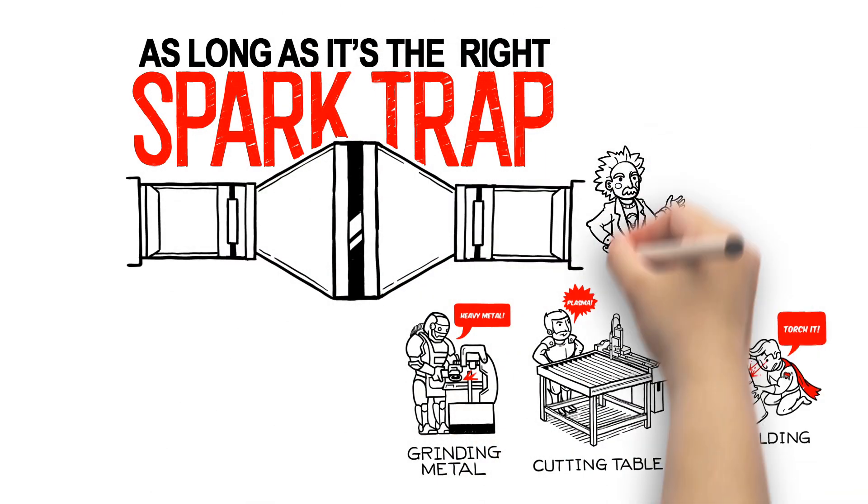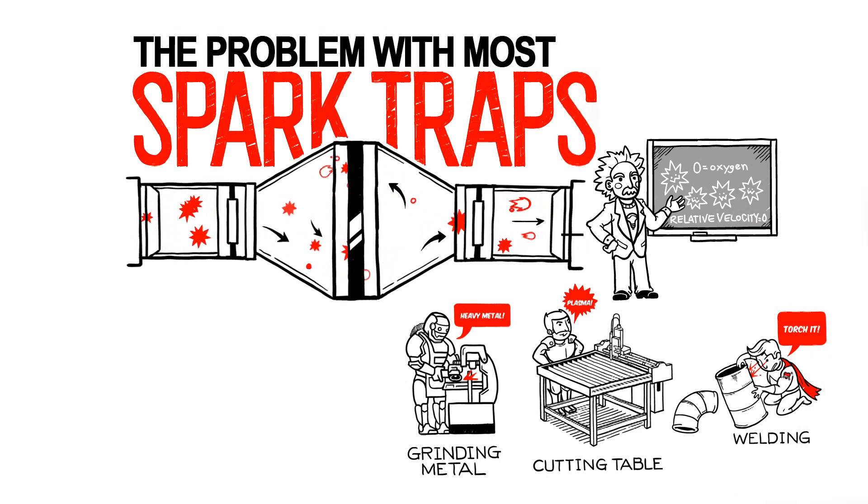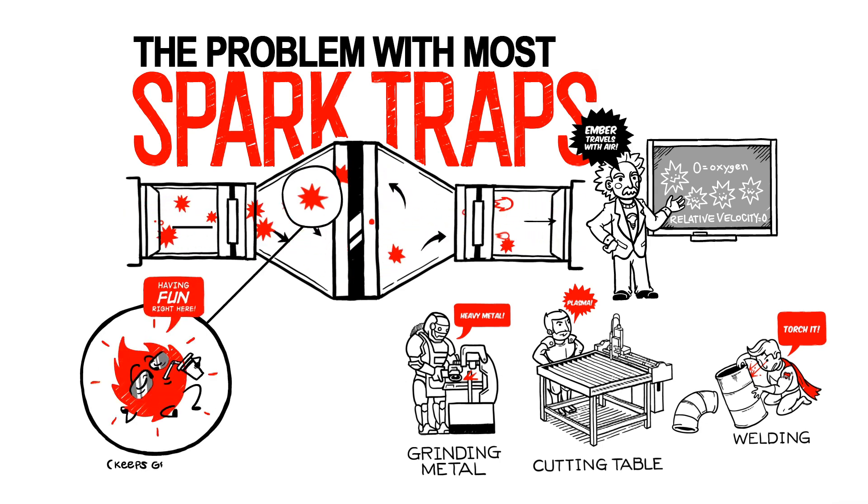All spark traps aren't created equal. Looking inside, the problem with most spark traps is they simply swirl the air. Many forget that the ember travels with the air with a relative velocity of zero. As we can see, this spark made it through just fine.